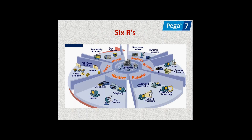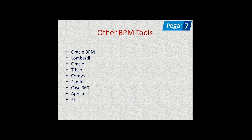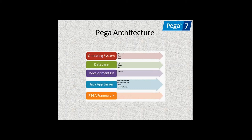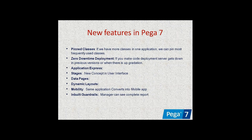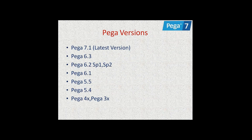The Six R's of BPM — Receive, Route, Report, Research, Respond, Resolve — are important for interviews and certifications. In the market Pega is the top BPM tool. The architecture supports Windows, any database, any application server, and works on Java JDK 1.7. Documents will be shared.